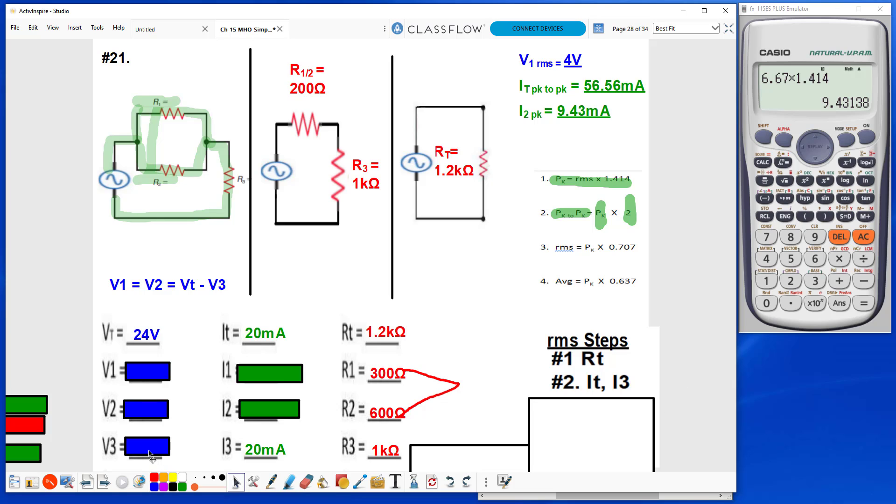Now I can find V3. By using Ohm's law, I3 times R3 gives me my V3 value of 20 volts. And then next, I understood that V1 and V2 will be the same value. But I used this equation to find that value by taking my Vt minus V3, and this gives me V1 and V2.